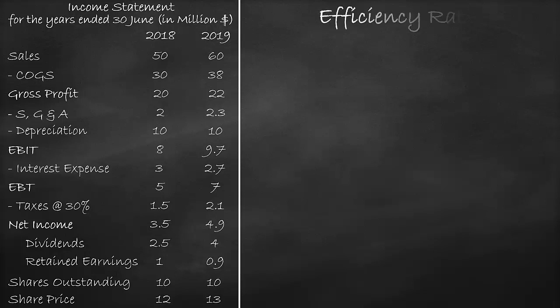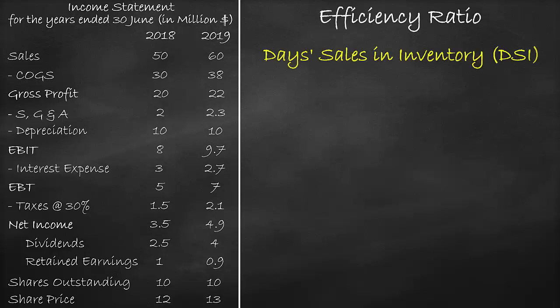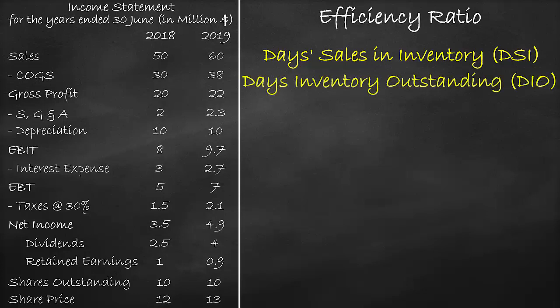An example of the efficiency ratio is the days sales in inventory ratio, which is also called the days inventory outstanding ratio. The days inventory outstanding formula is 365 divided by the inventory turnover. We can substitute directly in this formula if we calculated the inventory turnover ratio earlier. The inventory turnover formula is the cost of goods sold divided by inventory.